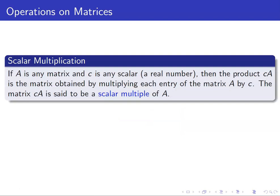For scalar multiplication, we have a matrix A and a scalar. When we say scalar, we're just talking about a real number. Here we are combining a scalar and a matrix, so that's why it's called scalar multiplication. We will learn later that there is another kind of multiplication — matrix multiplication — wherein we are going to multiply two matrices. How do we define the product cA? It is the matrix obtained by multiplying each entry of the matrix A by c. We say that the matrix cA is a scalar multiple of A.